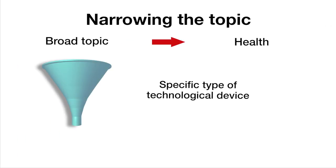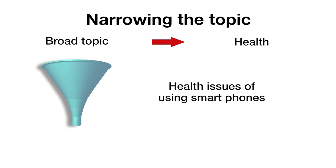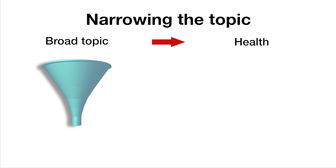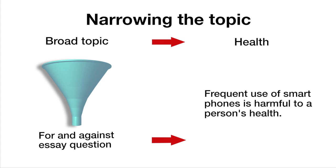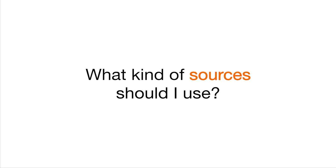The essay will be more manageable when you discuss a specific area. For example, if you want to write an essay on using technological devices, you could narrow the topic to health issues of using smartphones. You should then formulate a statement for discussion, like: 'Frequent use of smartphones is harmful to a person's health — to what extent do you agree with the statement?' Isn't that more straightforward?